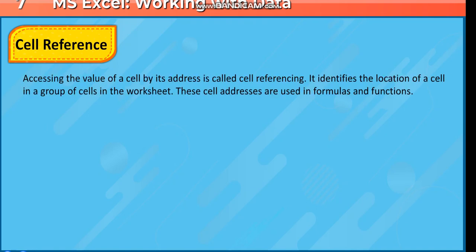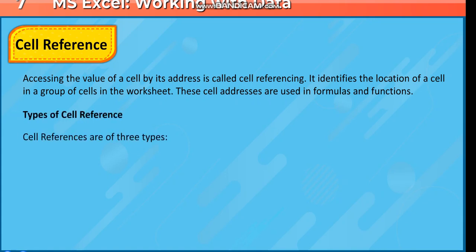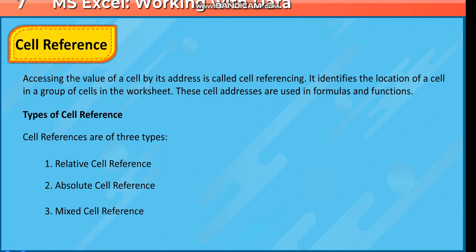Cell Reference: Accessing the value of a cell by its address is called cell referencing. It identifies the location of a cell in a group of cells in the worksheet. These cell addresses are used in formulas and functions. Cell references are of three types: relative cell reference, absolute cell reference, and mixed cell reference.